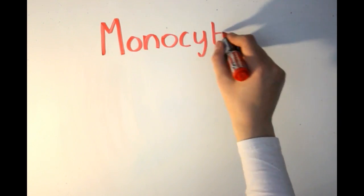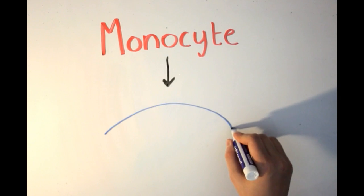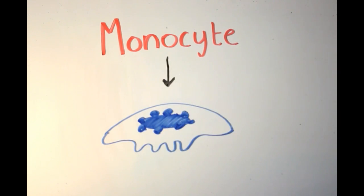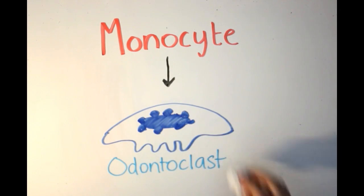Odontoclasts originate from monocytes and their function is to resorb cementum, which is usually replaced. This process is normally seen when primary teeth are being replaced by permanent teeth.